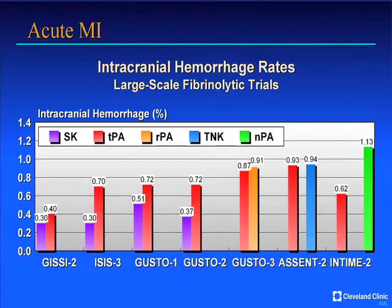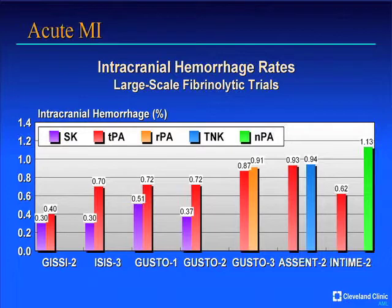The most feared complication of fibrinolytic therapy is intracranial hemorrhage, which in over 80% of cases is associated with death or severe disability — essentially equivalent to death. Intracranial hemorrhage rates have ranged from 0.3–0.4% with streptokinase to as high as 0.7–1% with more aggressive regimens, though it's generally accepted to be in the range of 0.4–0.6% with modified heparin dosing.